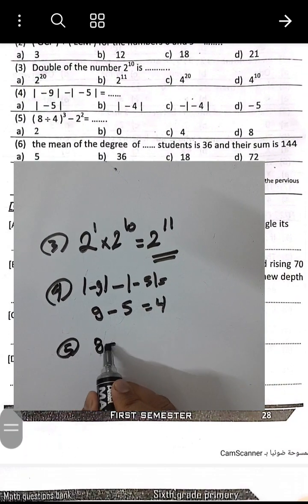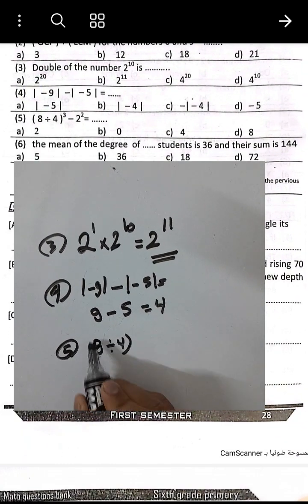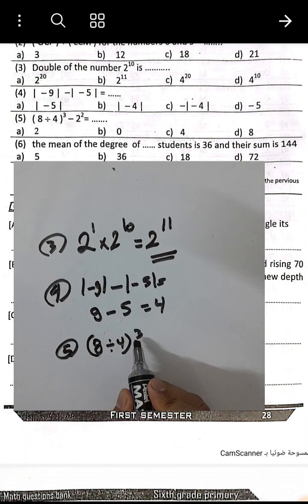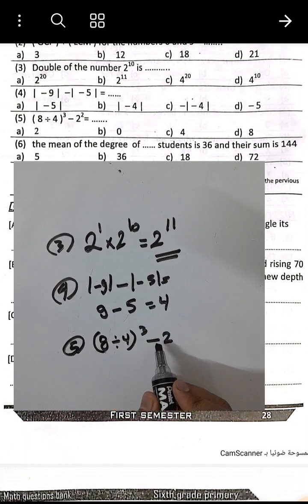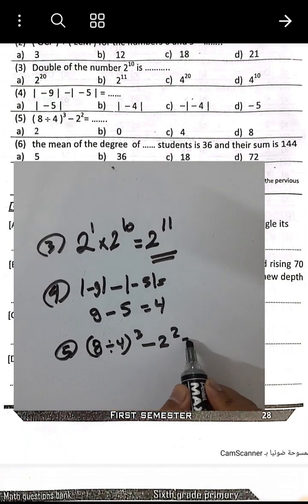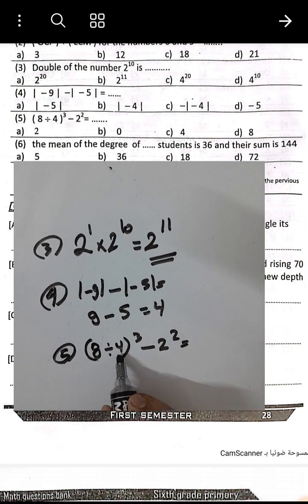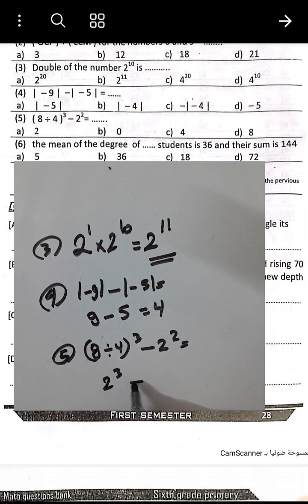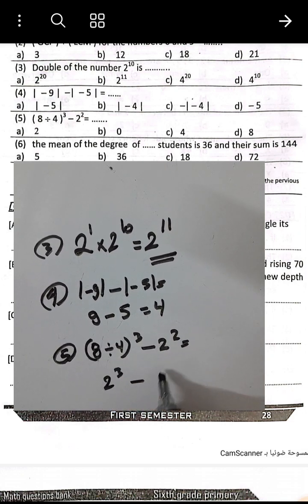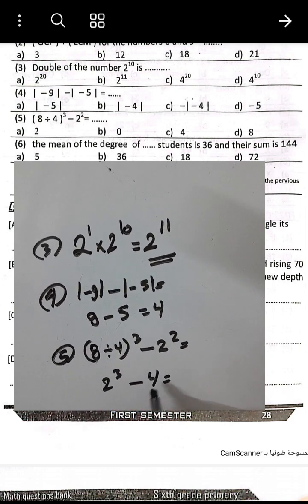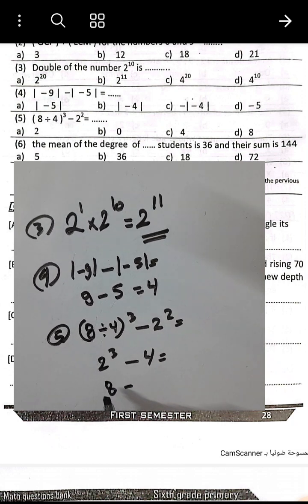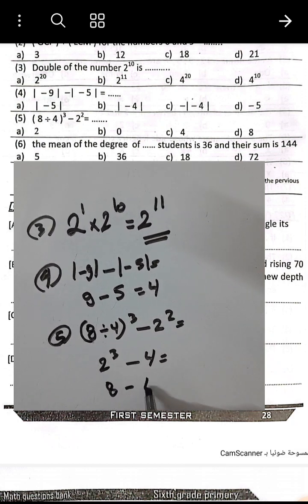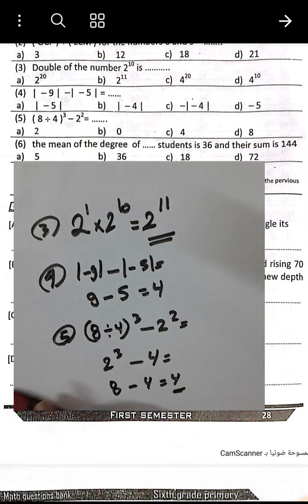Question number 5: 8 divided by 4, or 2 to the power 3 minus 2 to the power 2. 2 cubed equals 8; 2 squared equals 4. 8 minus 4 equals 4. The difference is 4.